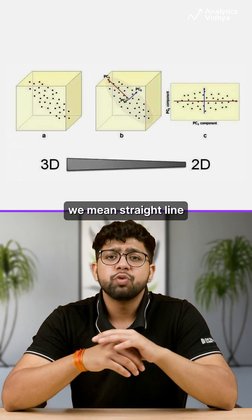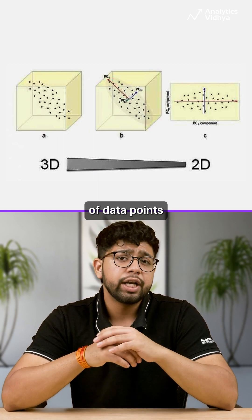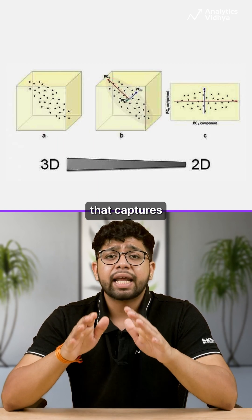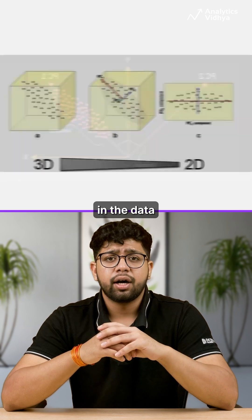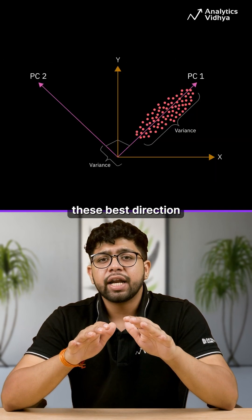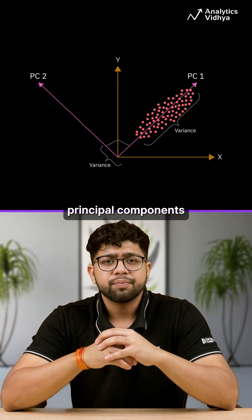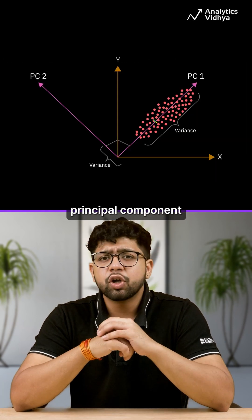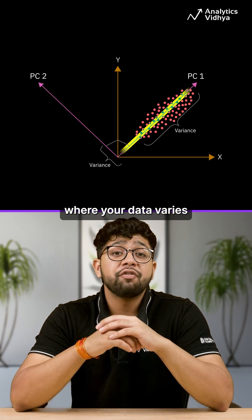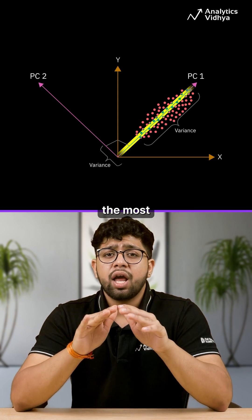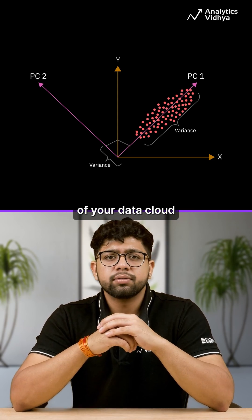By directions, we mean a straight line through the cloud of data points that captures the most variation in the data. These best directions are called principal components. The first principal component is the direction where your data varies the most — like the longest stretch of your data cloud.